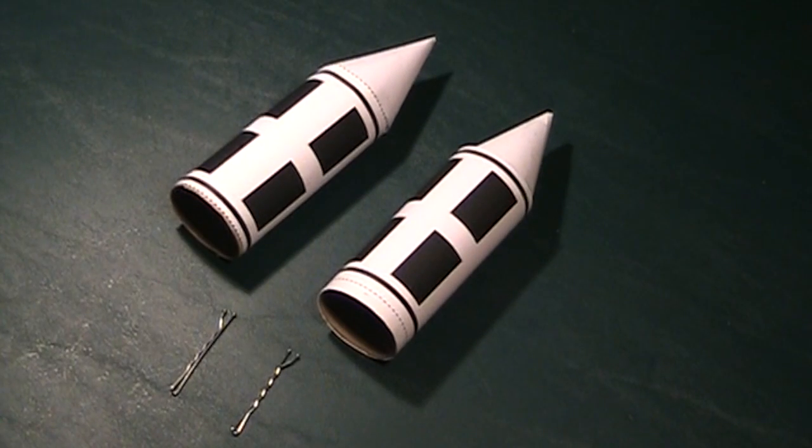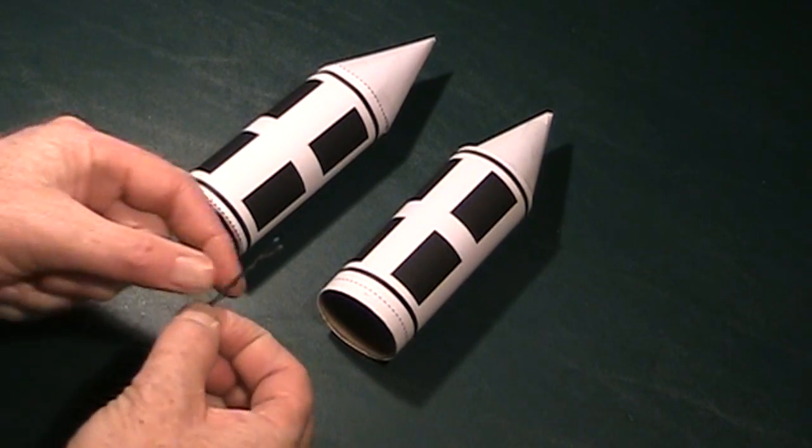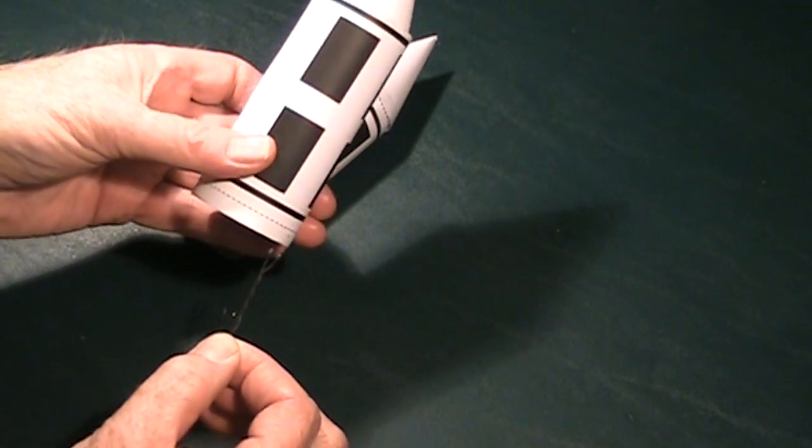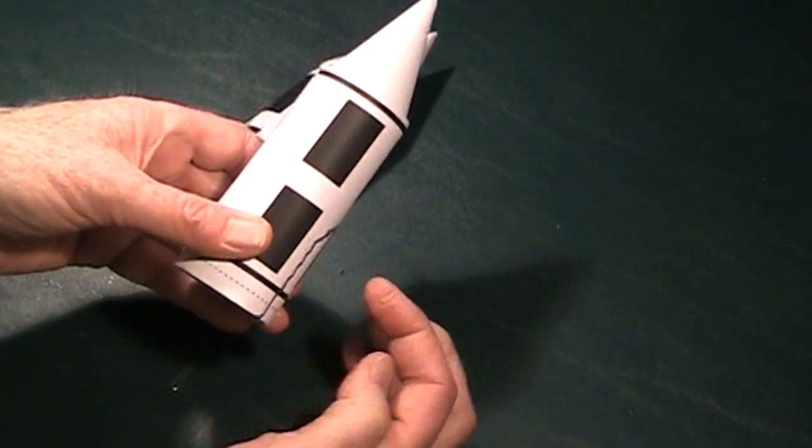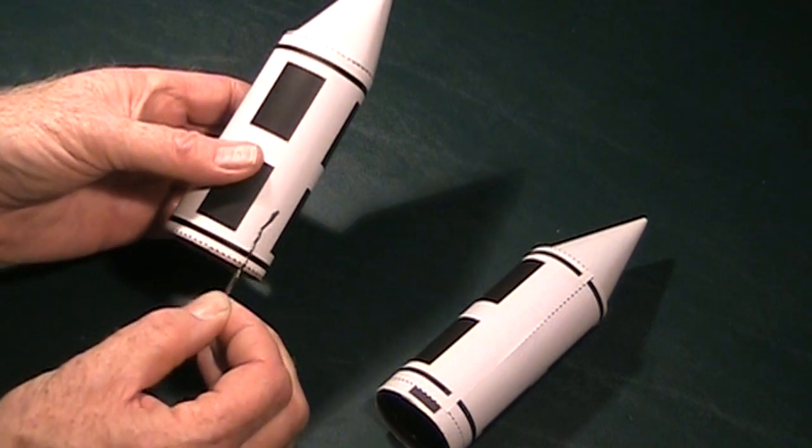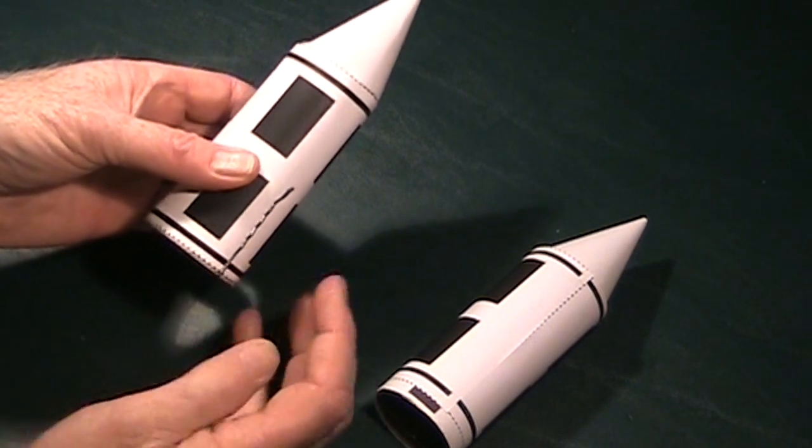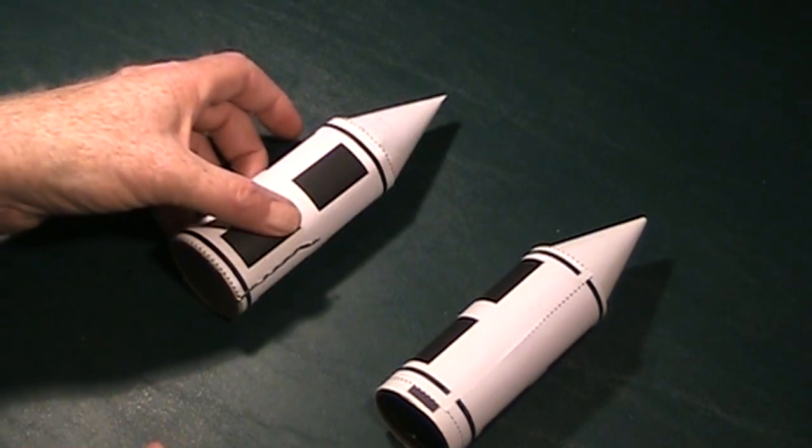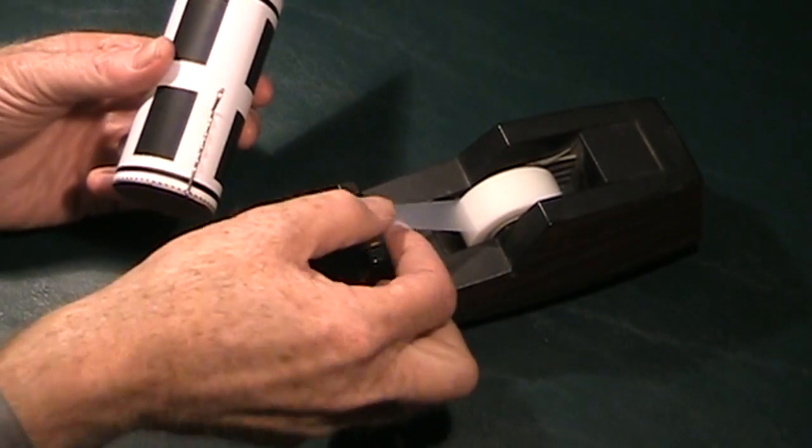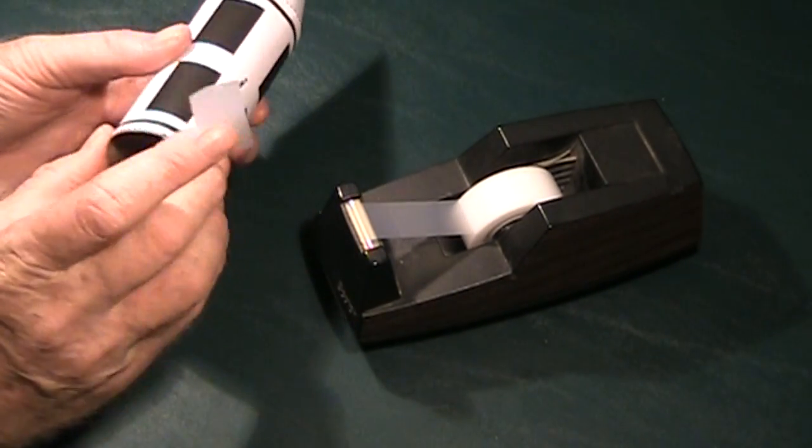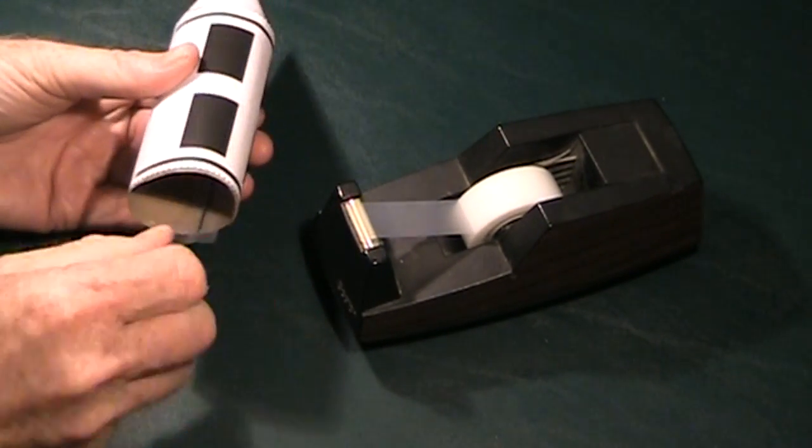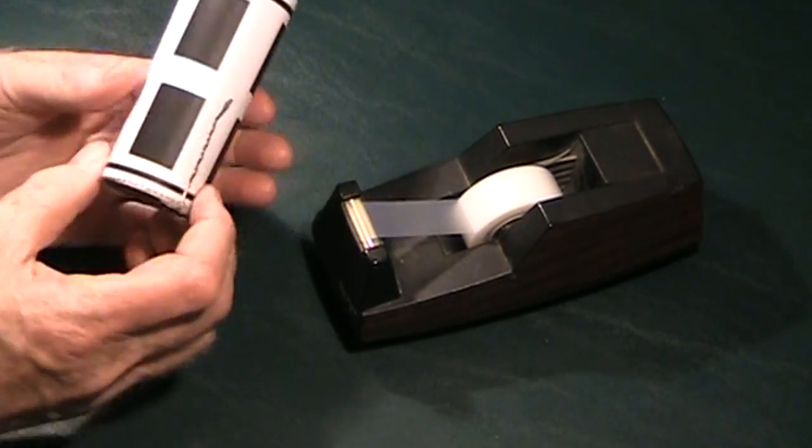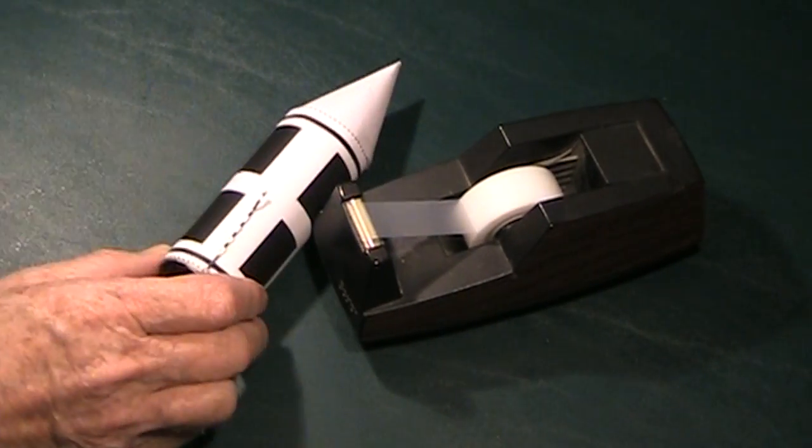You've probably been wondering why we need bobby pins. Well that's to hold the rocket pieces together. Once you slide on the bobby pin, make sure the fatter end is on the outside. Put one bobby pin on each toilet paper roll section just like this. Once both bobby pins are in place, take a piece of tape, roll the toilet paper roll around and tape the bobby pin from the inside so that way it doesn't slip off very easily. Do this on both rolls.